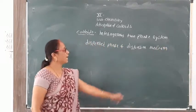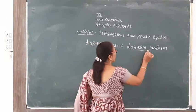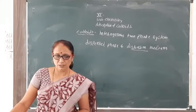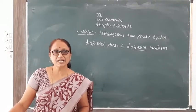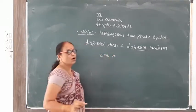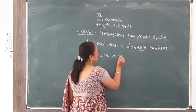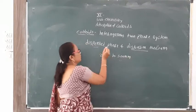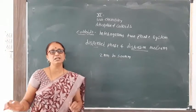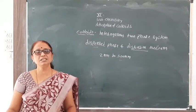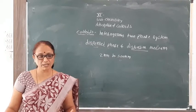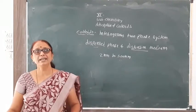The phase which is present in the large amount is called the dispersion medium, and the phase present in the smaller amount is the dispersed phase. The colloidal particles of the dispersed phase have a particle size in the range of 2 nanometers to 500 nanometers. This particle size is larger than the size of molecules, but smaller than particles visible to the naked eye.